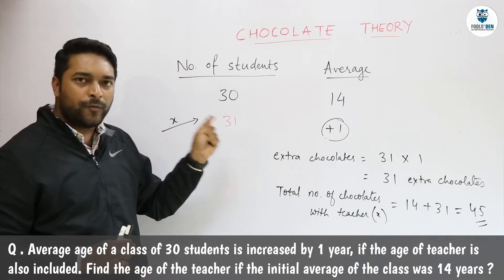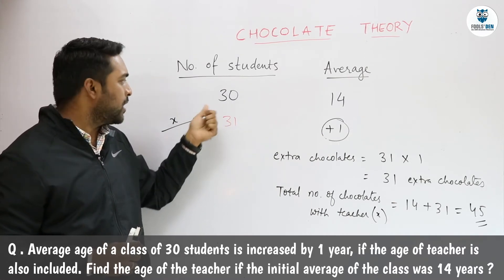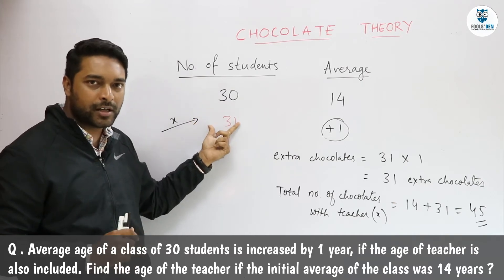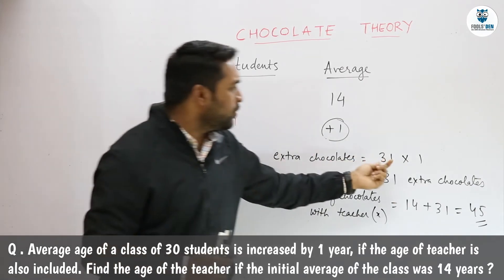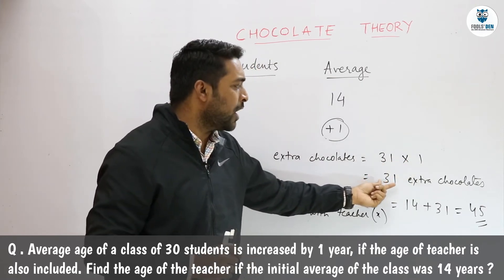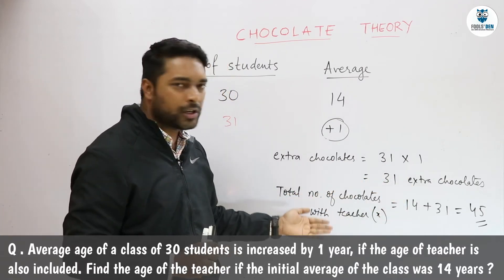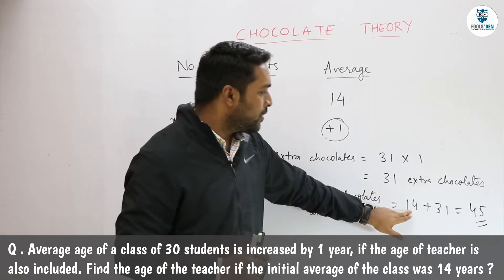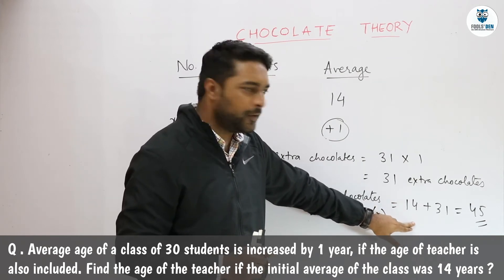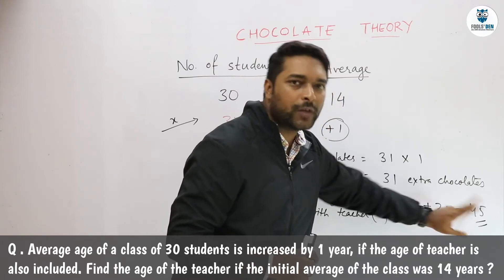She must have some extra chocolates which will increase the average by 1. So she has to give 1 chocolate to each of the 31 persons, because now including the teacher there are 31 persons in the class. That means she must have 31 chocolates extra. So the total chocolates with the teacher is 14 (kept initially) plus 31 extra, which equals 45 chocolates.